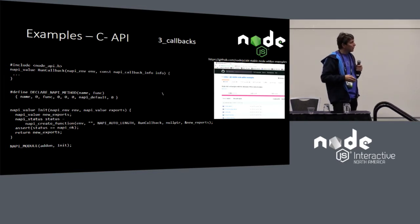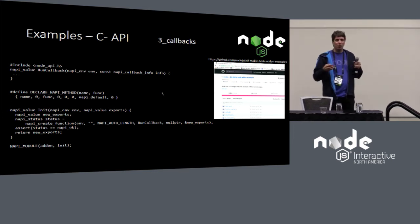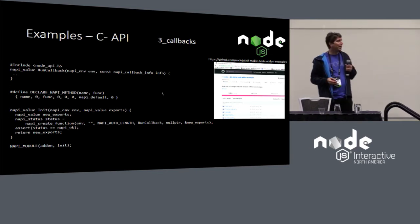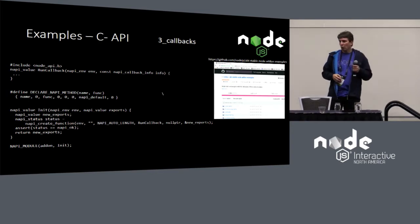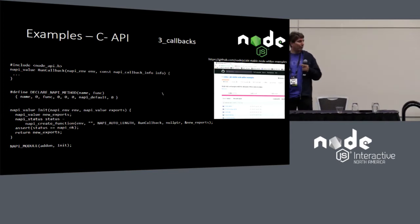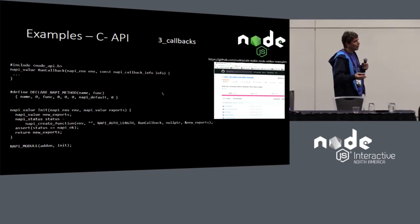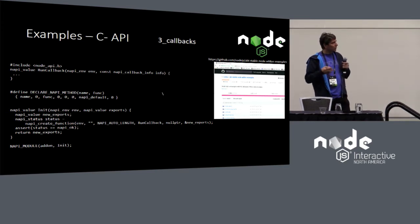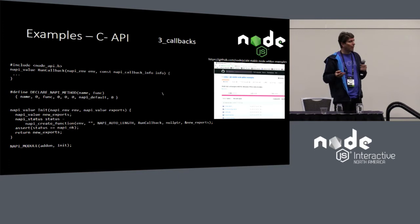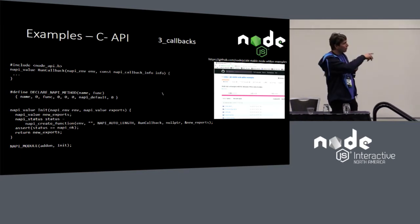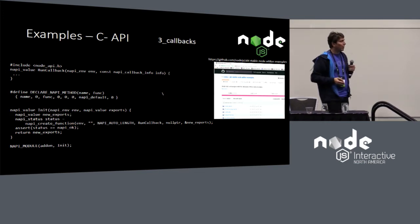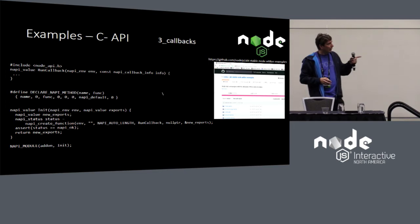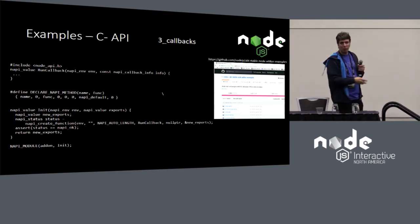The NAPI examples show how you would code things in the C API. This example has JavaScript call us, pass us a callback, which we then invoke with a parameter. Just as before, we have an init module and an init function as your entry point. The main difference is it takes NAPI types instead of V8 types — so we have an env and an exports. There's no module being passed in, which we abstracted out because we didn't want to be tied to CommonJS and wanted to future-proof against supporting new module loaders.